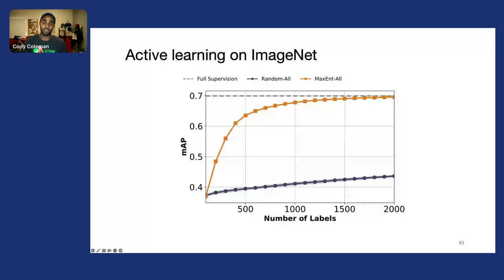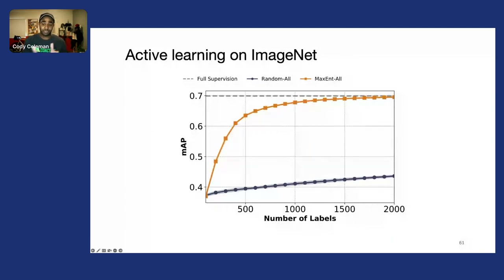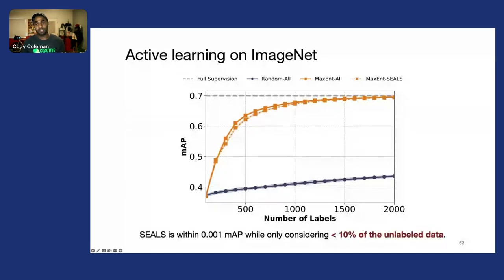This is a huge gap compared to random sampling, dramatically improving data efficiency and reducing labeling and training costs. However, this process is slow because we're scanning over all of the data.